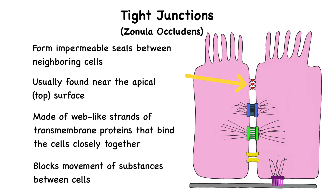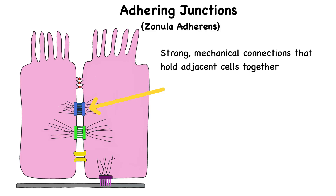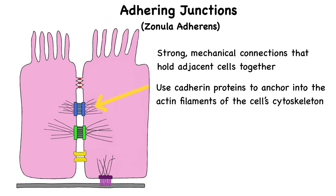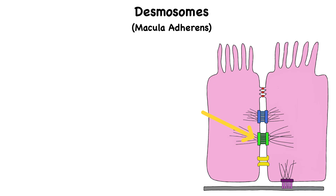Adhering junctions are strong mechanical connections that hold adjacent cells together. They use cadherin proteins — a type of cell adhesion molecule — that anchor them into the actin filaments of the cell's cytoskeleton. You can think of them like sturdy belt straps wrapping around the cell, keeping neighboring cells tightly connected. These junctions are especially important in epithelial tissues that need to stay intact during stretching or movement, like the lining of your intestines. They help maintain tissue stability and allow cells to respond together to mechanical stress.